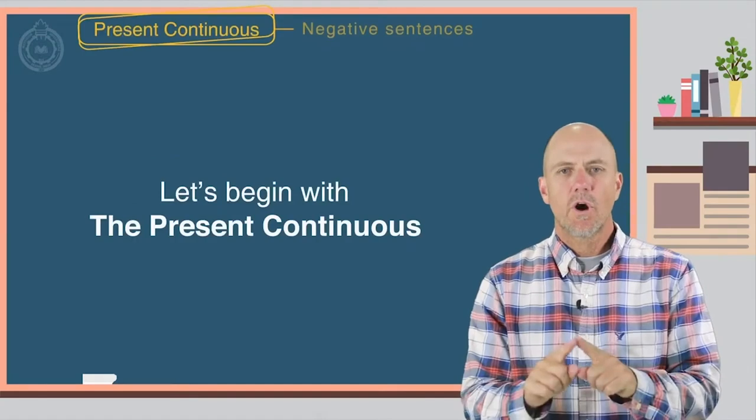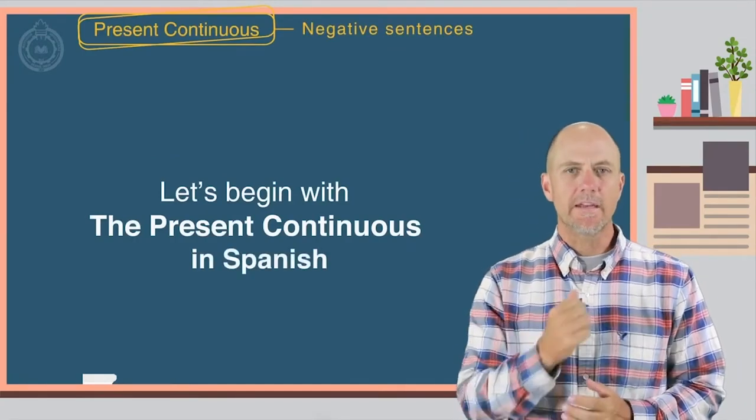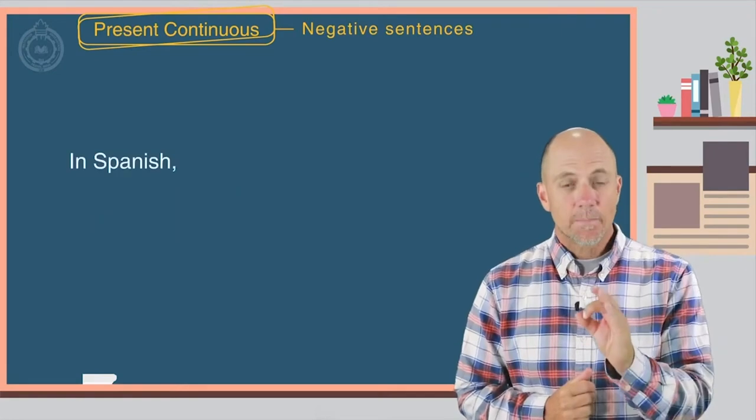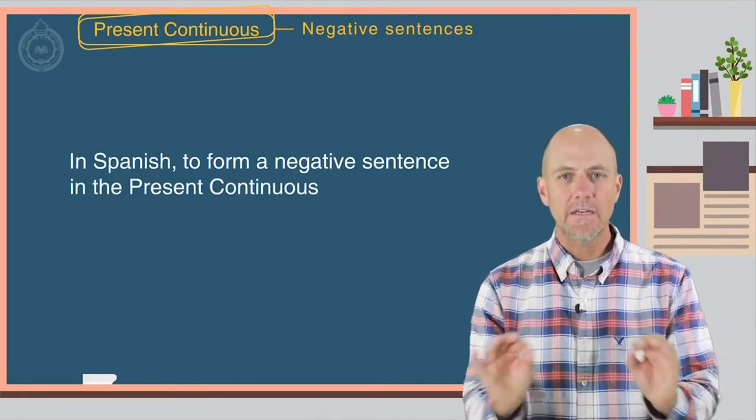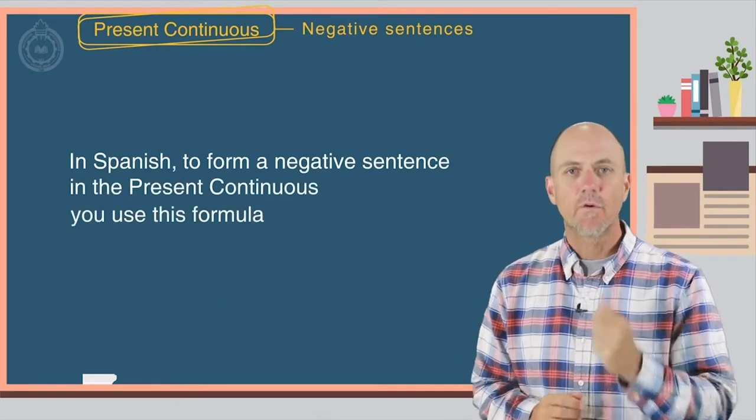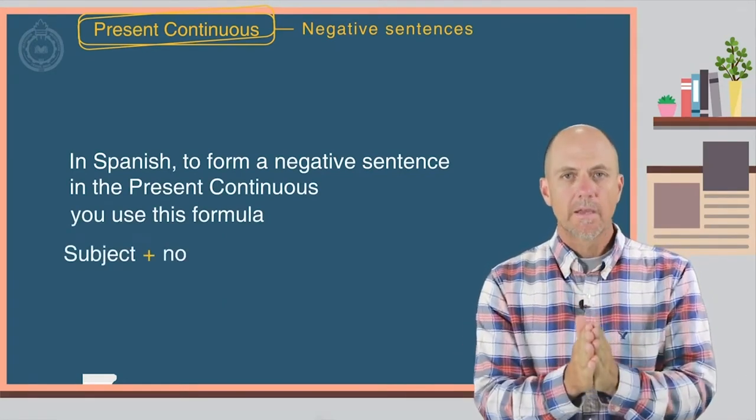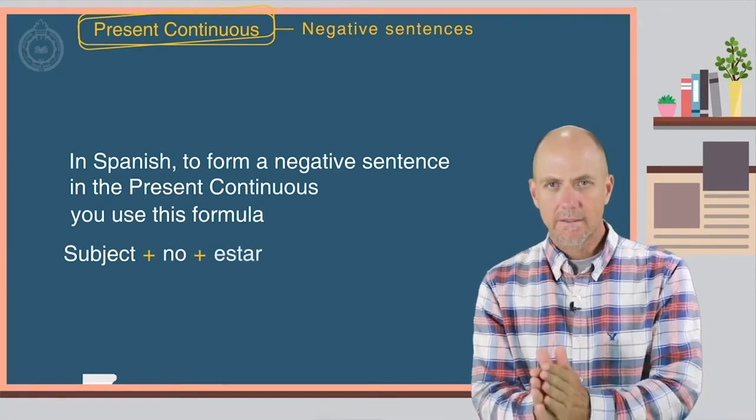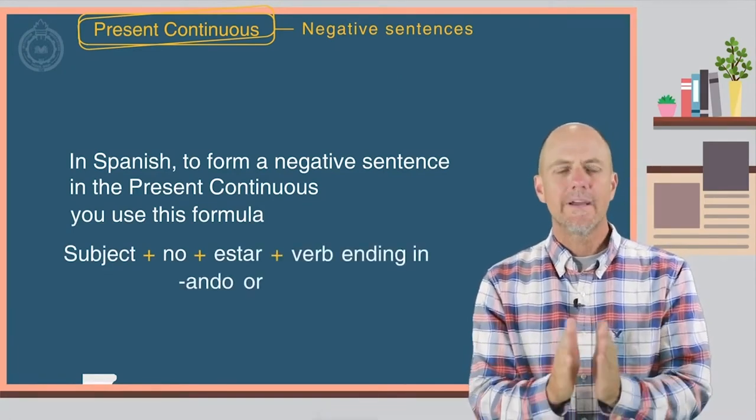Let's begin with what you already know, the present continuous in Spanish. In Spanish, to form a negative sentence in the present continuous, you use this formula: the subject, plus the word no, plus estar, plus the verb ending in ando o yendo.